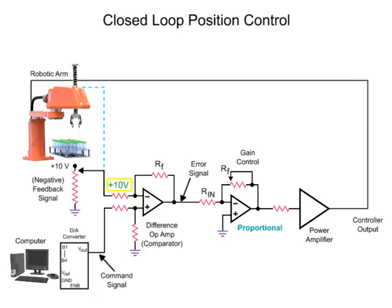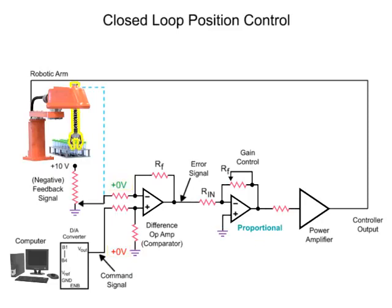When the feedback signal voltage matches the command signal voltage, the arm has reached the desired position. For example, with the arm at the bottle-pick position, the potentiometer output voltage of zero matches the command signal of zero from the computer.